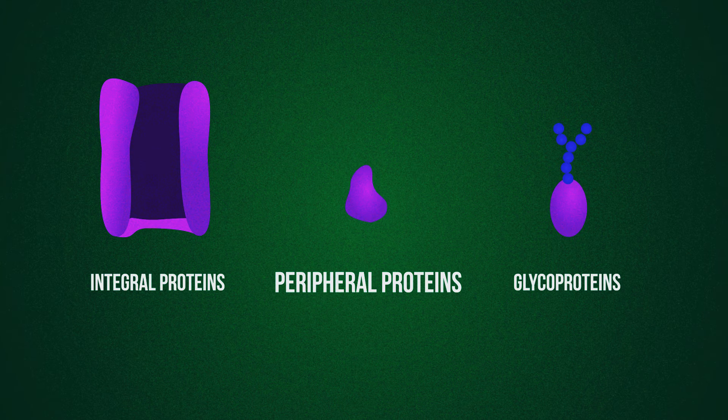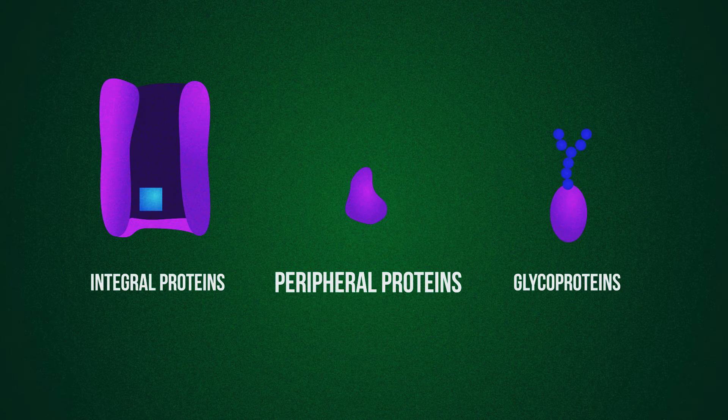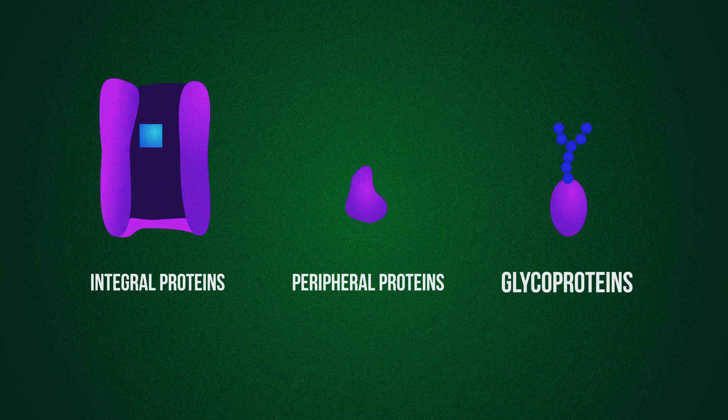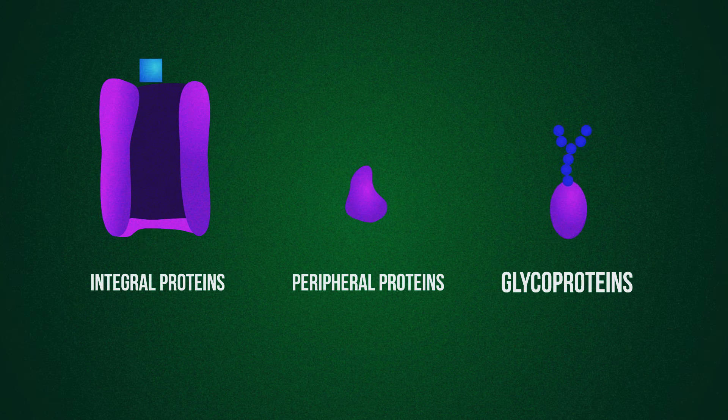The peripheral proteins are involved in communication and some transport. And the glycoproteins play an important role in cell recognition by the immune system.